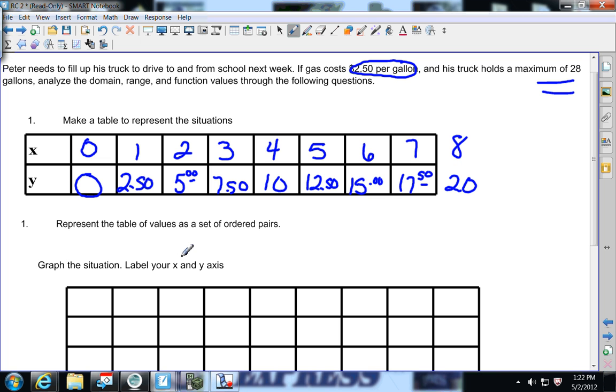Represent the table of values as ordered pairs. You should be able to write this as ordered pairs. Zero zero, one and $2.50, two and five, three and $7.50, four and $10, five and $12.50 and so on. Is this problem linear? Does it make a straight line? Does it go up by the same amount all the time?